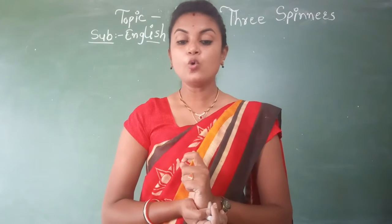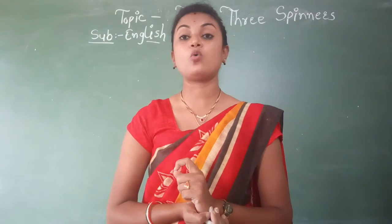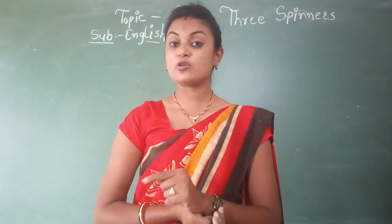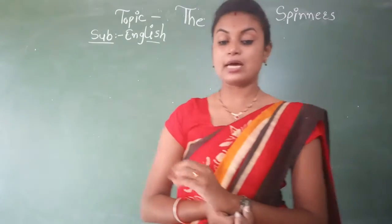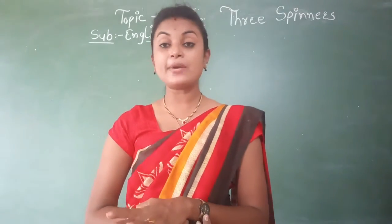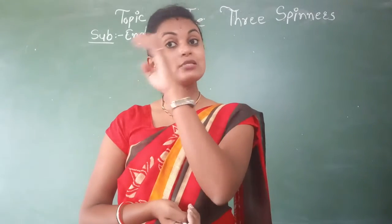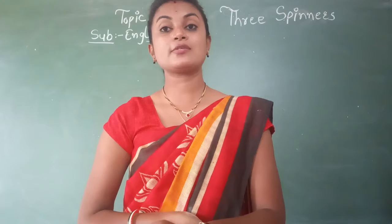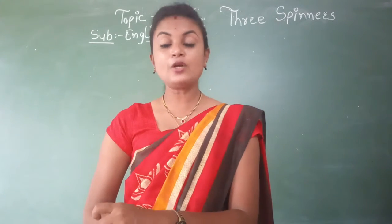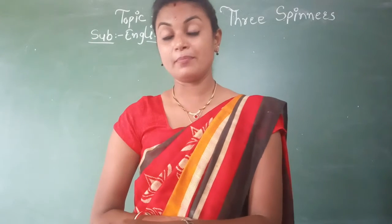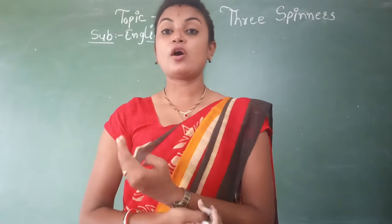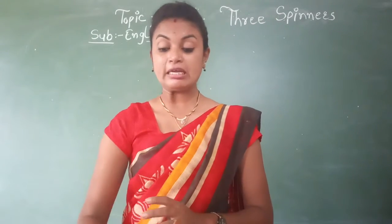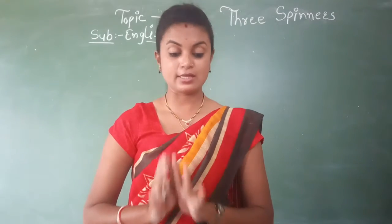Now, fifth one: who gave Laurel lasting happiness and how? Ant mein kisne sabse zyada khushi di aur kaise? The answer is B. The prince, by ordering that Laurel would not touch the spinning wheel. Prince ne order diya ki Laurel spinning wool ko touch nahi karegi. So these are the finally correct answers. Please students, you have to re-correct the answers.